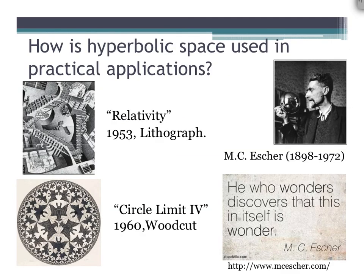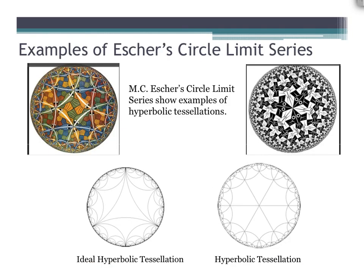How is hyperbolic space used in practical applications? Artist M.C. Escher is known for creating unusual and almost impossible-looking structures in his works of art. In Escher's Circle Limits series, he uses hyperbolic space to give his patterns a sense of infinite growth. When the patterns Escher created moved toward the edges of the circle's circumference, they seemed to continue infinitely — not unlike the ideal triangles mentioned previously.